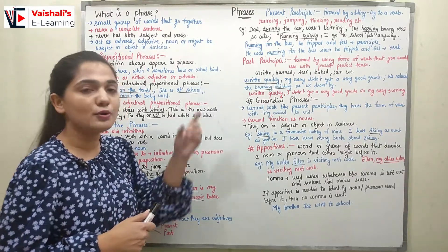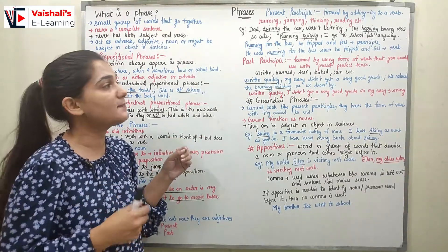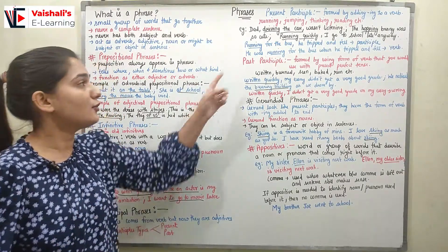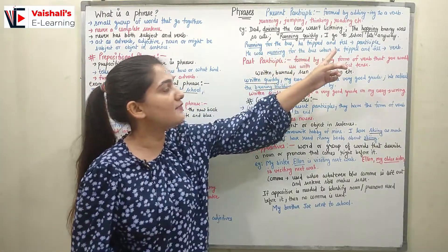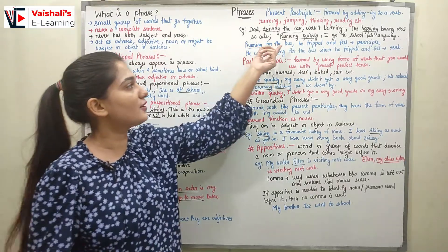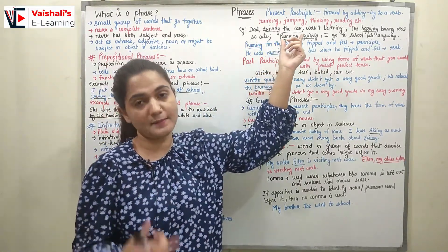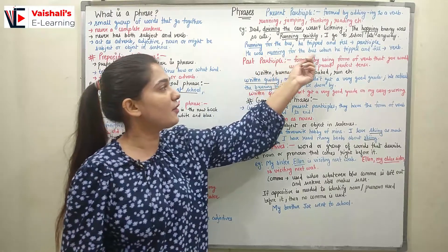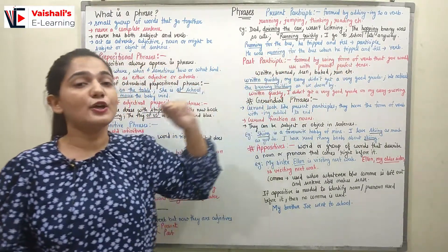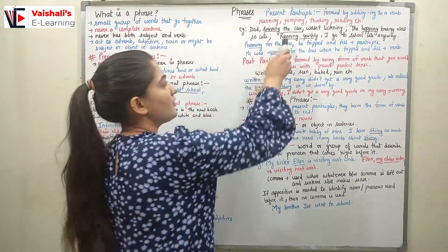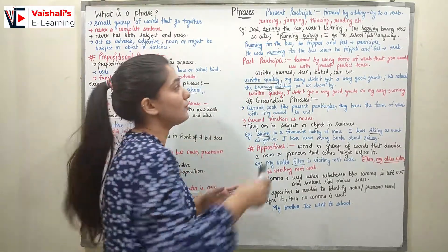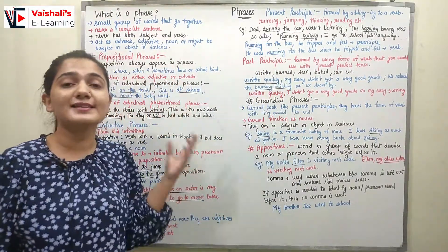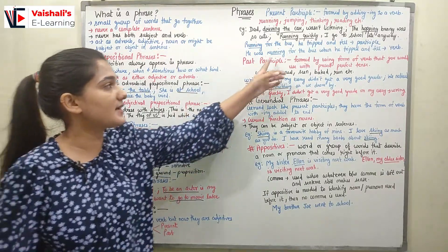Let's compare two cases. 'Running for the bus, he tripped and fell' — here 'running for the bus' is a present participle phrase acting as an adjective. Versus 'He was running for the bus when he tripped and fell' — here 'running' is used as a verb, not a participle.